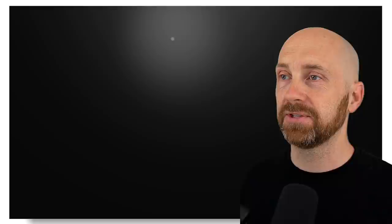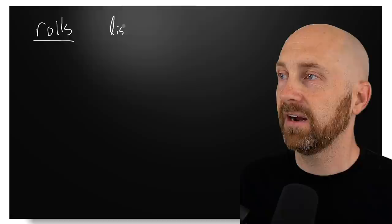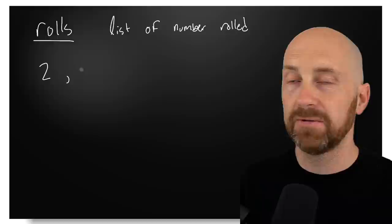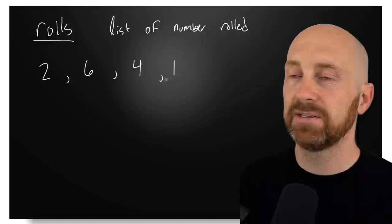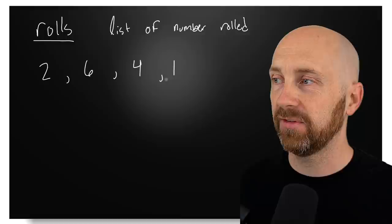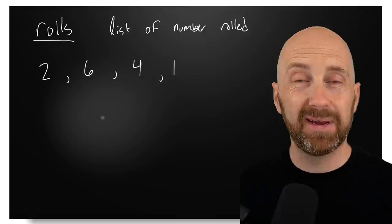Let's imagine an example of why we might want to use this. We're writing a game with a die, and the player can roll that die until they roll a one. We're going to keep track of the rolls. So we'd have a list that keeps track of the number rolled. The first number rolled is a two — not a one, so we keep rolling. Then a six, then a four, and finally a one ends the turn. So we've tracked two, six, four, and one.